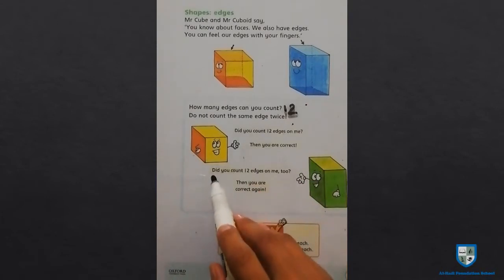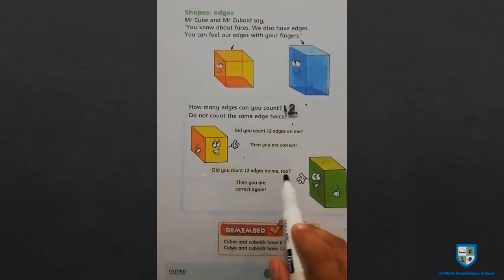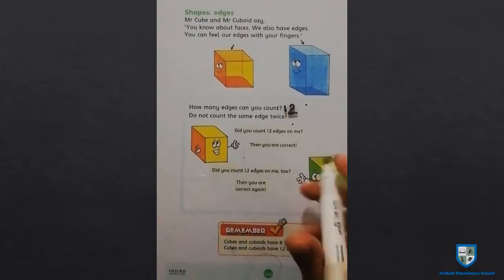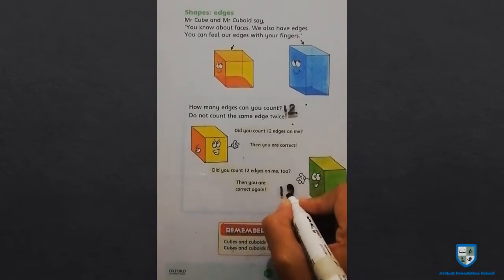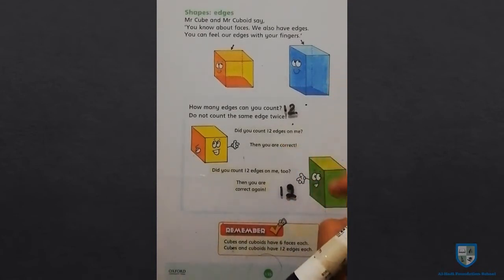Did you count 12 edges on me? Cuboid also says that. The total edges are 12. The faces are 6. The corners are total 8.